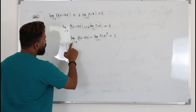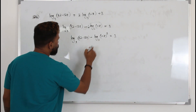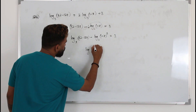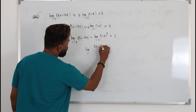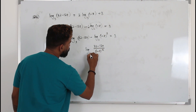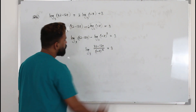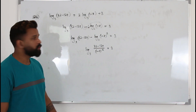Now, you have log A minus log B. Write it as log of A over B equals 3. That's step number two.